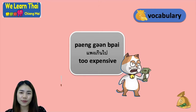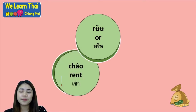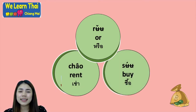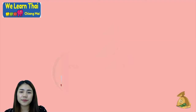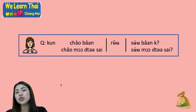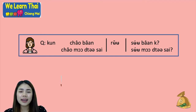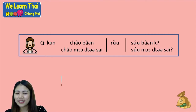Next, we have the question word หรือ which means or, เช่า meaning to rent, and ซื้อ meaning to buy. When you want to ask your friend whether they buy or rent something, you can follow this pattern: คุณเช่าบ้านหรือซื้อบ้านคะ — do you rent a house or do you buy a house?